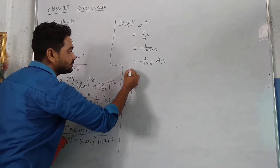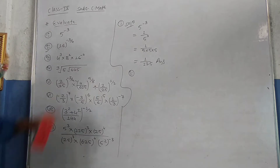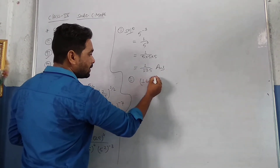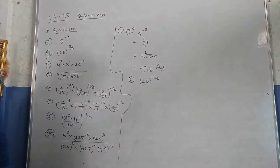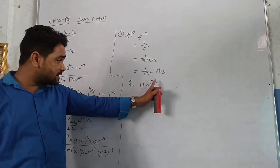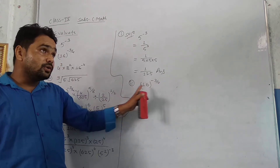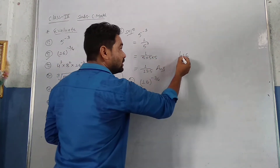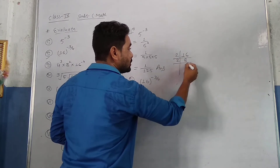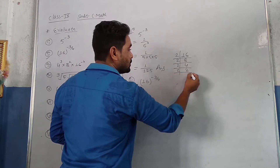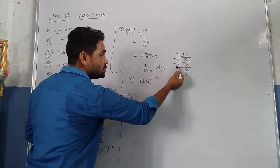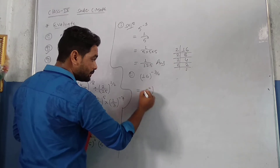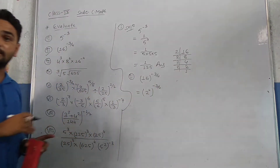Similarly, for the second one: 16 whole power minus 3 upon 4 is there. The base is 16 and the power is minus 3 upon 4. Now, 16 can be written in the form of 2: take the factors of 16 — 2, 8; 2, 4; 2, 2; 2, 1. How many 2s are here? 1, 2, 3, 4. So 16 can be written as 2 power 4, and the whole power is minus 3 upon 4.